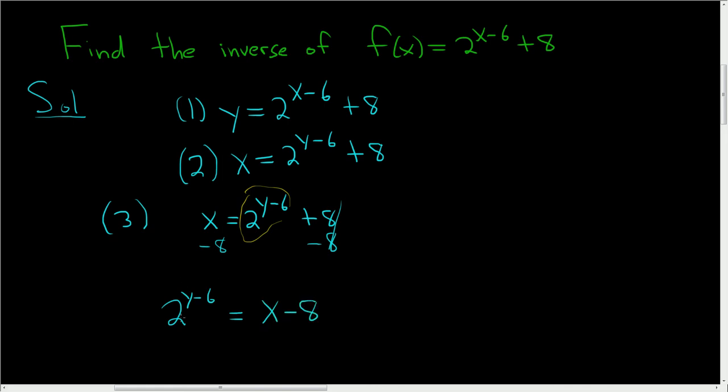Now if you're really good at going from exponential form to logarithmic form, you can do that in the next step. If you want to show some more work, you could take the log base 2 of both sides. And when you do that, you can use the formula log base b of b to the x, that's equal to x. So here, log base 2 of 2 to the x, this whole thing here is your x, is equal to y minus 6. And over here we have log base 2 of x minus 8.